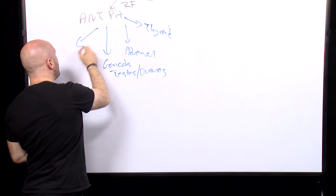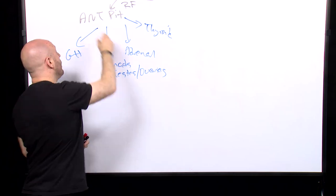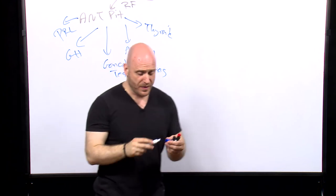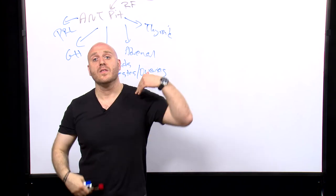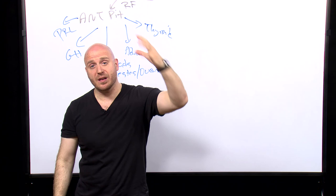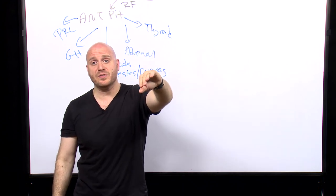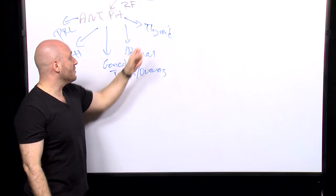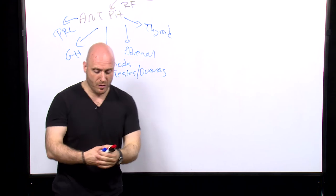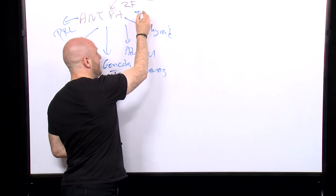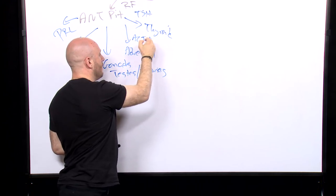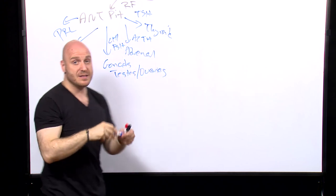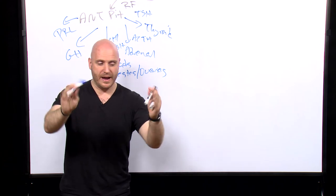We have the growth hormone axis, which we'll discuss is a little different. We also have the prolactin axis, which is a little different. In general, this is the order of sequence: hypothalamus tells the anterior pituitary what to do through releasing hormones, and then the anterior pituitary tells the target glands what to do through stimulatory hormones such as TSH, ACTH, LH, FSH, GH itself, and prolactin itself.